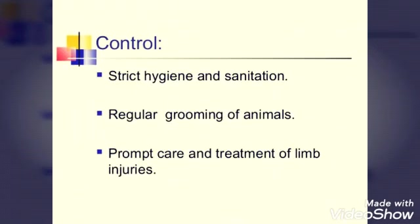For control and prevention of the disease, you can follow strict hygiene and sanitation, regular grooming of animals, and prompt care and treatment of limb injuries. Since we know it is caused through contact with cattle, we have to strictly maintain hygiene of ourselves and where the cattle are kept. Proper animal grooming should be done so that no bacteria are present on them, and we have to take care of limb injuries for safety from lymphangitis.